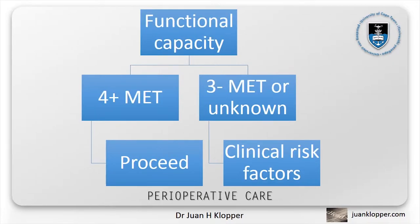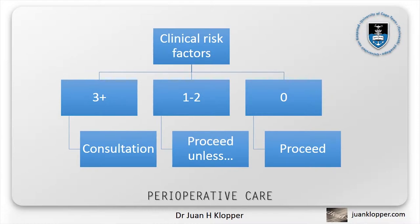If the planned surgery is intermediate or high-risk, the next step is to consider the functional capacity of the patient, remembering that a low score might not solely be due to cardiac problems. If the patient can reach 4 or more metabolic equivalents, the surgery can go forward. If the patient can reach less than 4 metabolic equivalents, or their functional status is unknown, we need to consider the clinical risk factors as described above. If 3 or more are present, consider consultation. If 1 or 2 risk factors are present, the surgery can proceed unless it is felt that consultation might lead to a change in management. If no clinical risk factors are present, it is safe to proceed. And there you have it — a simple management algorithm.